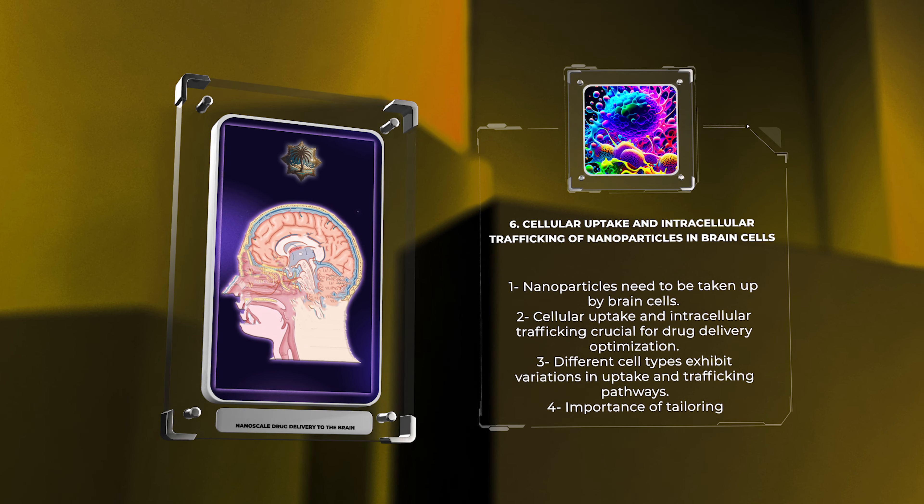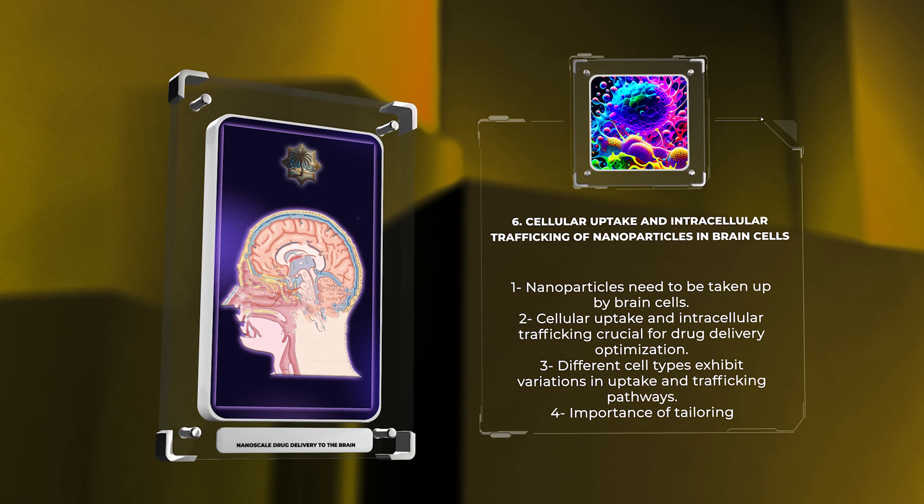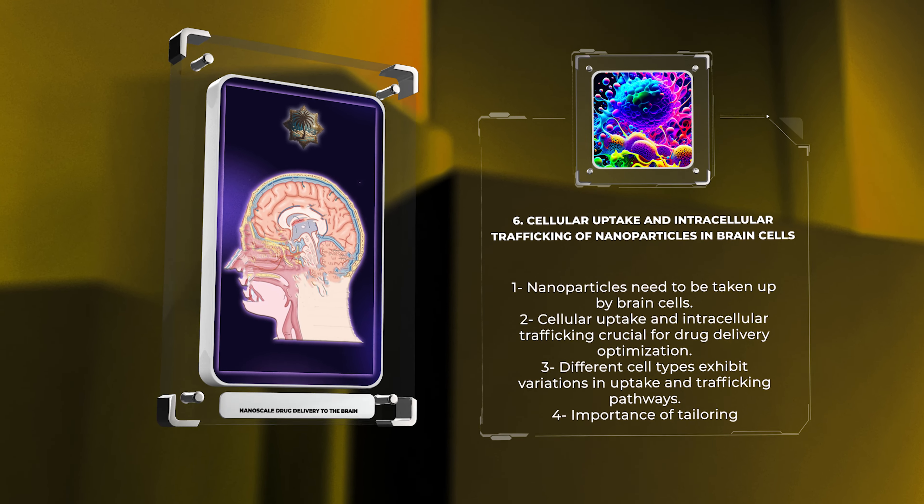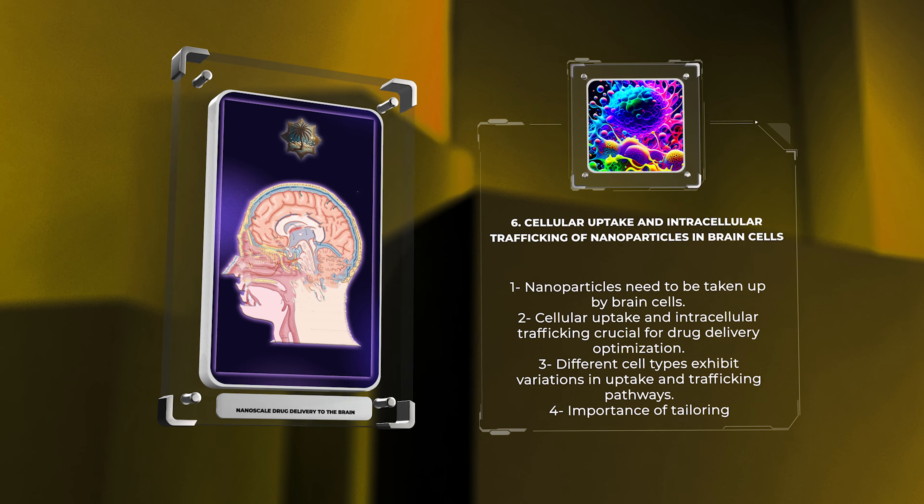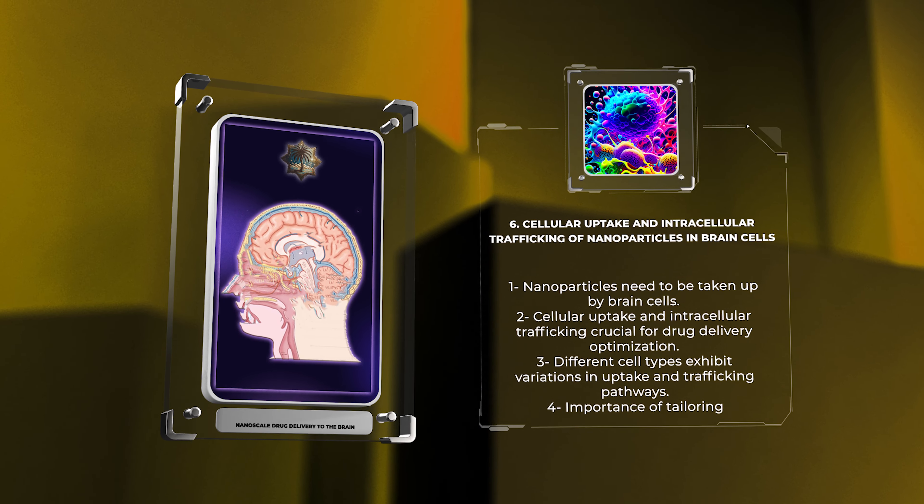It has been found that different cell types in the brain may exhibit variations in nanoparticle uptake and trafficking pathways, highlighting the importance of tailoring nanoparticle properties to specific targets.